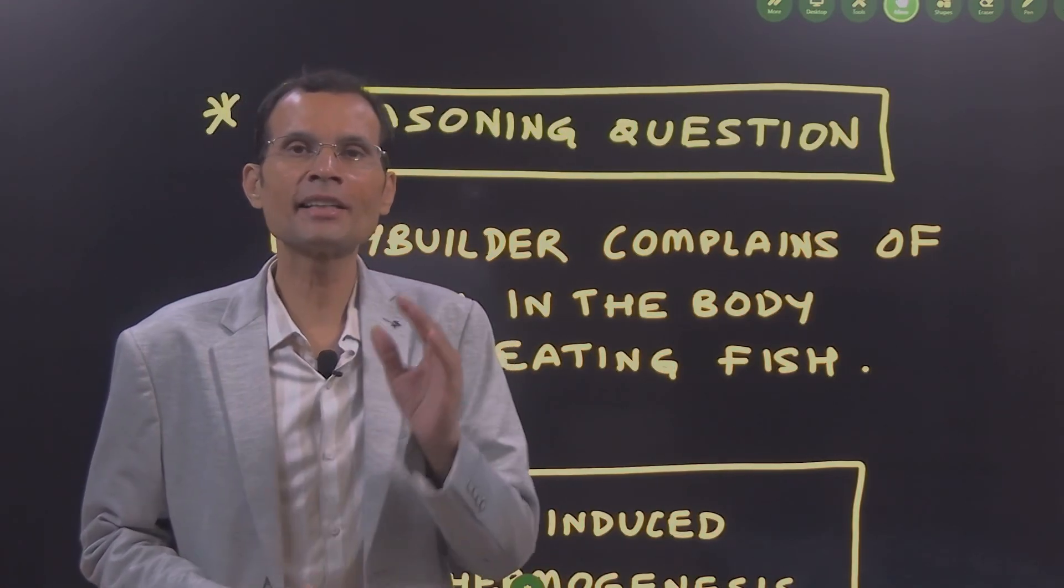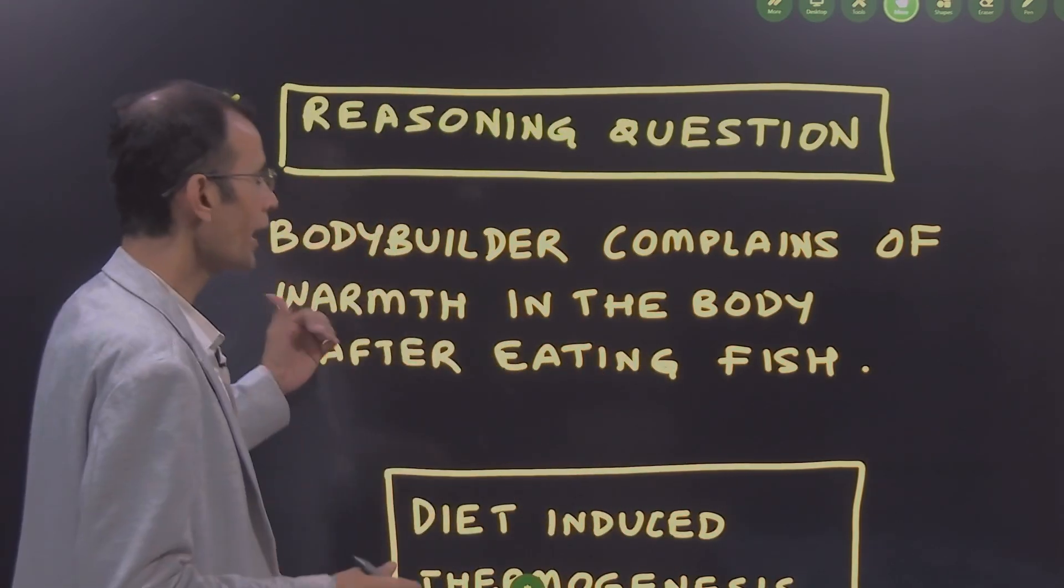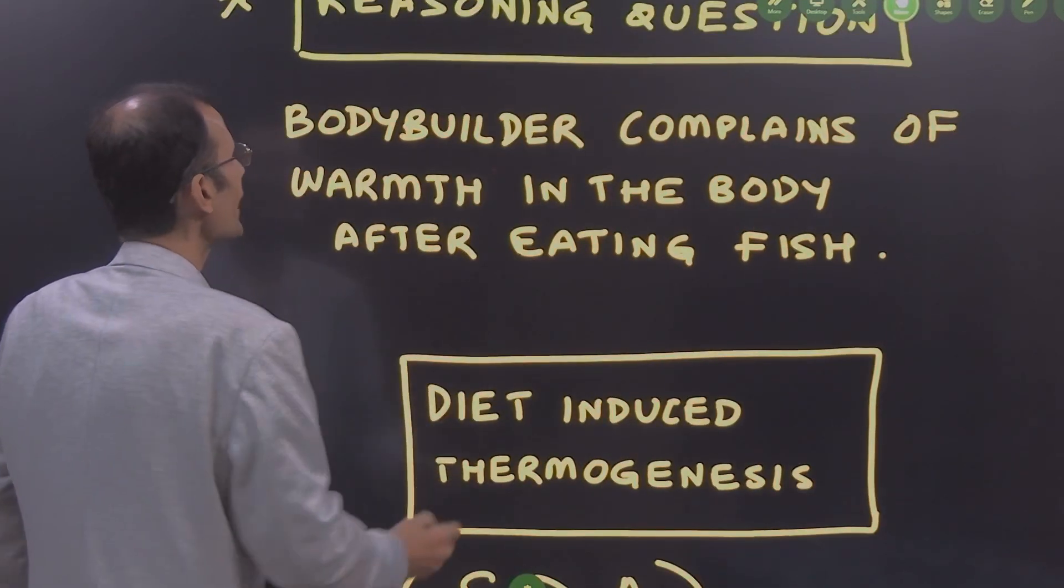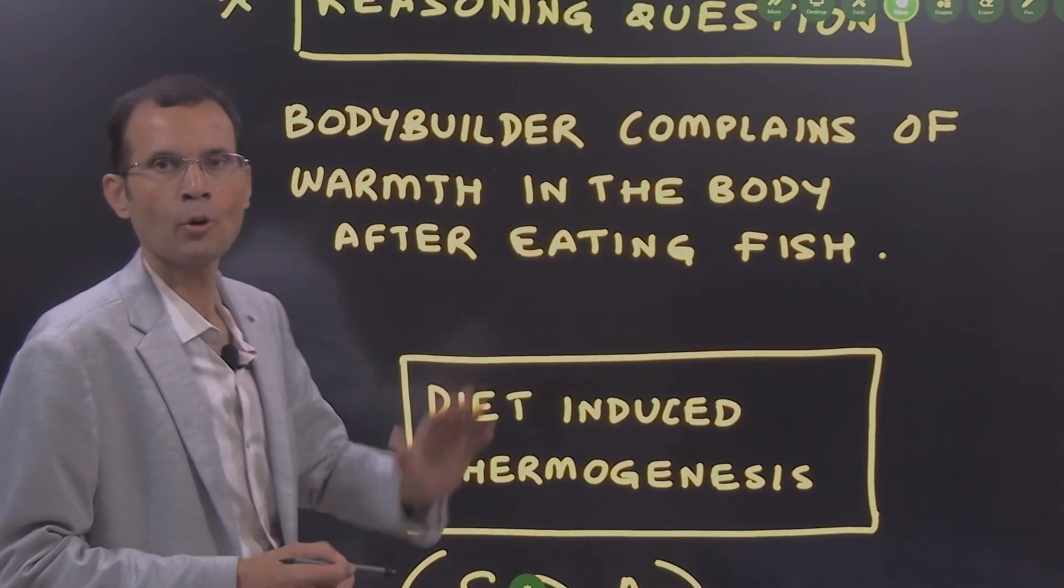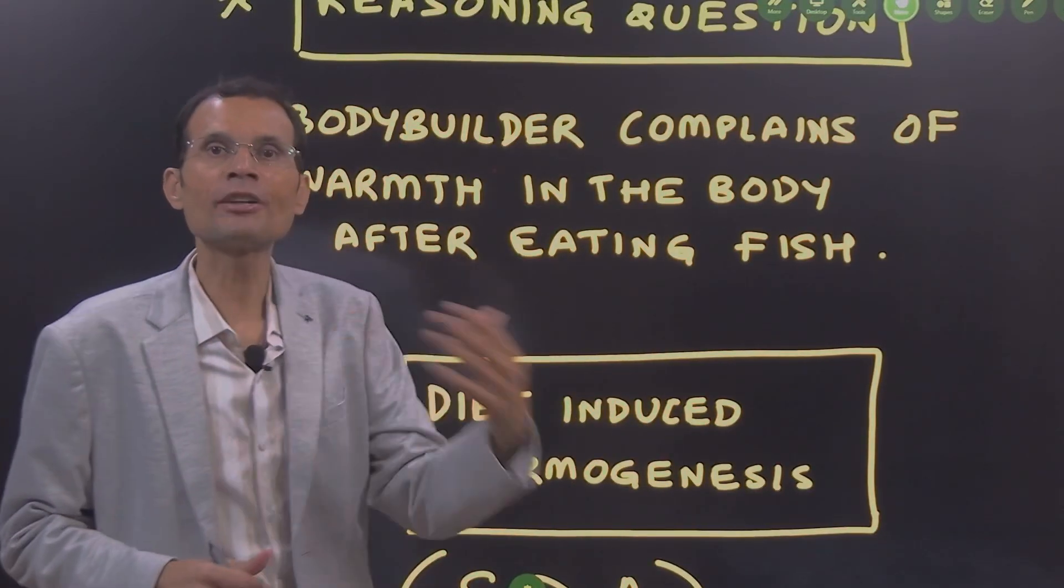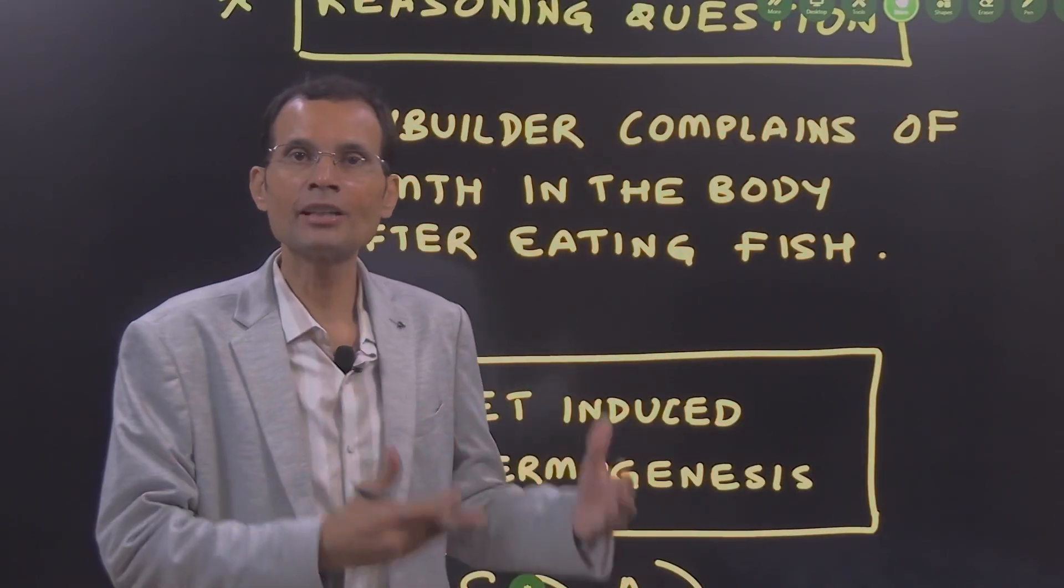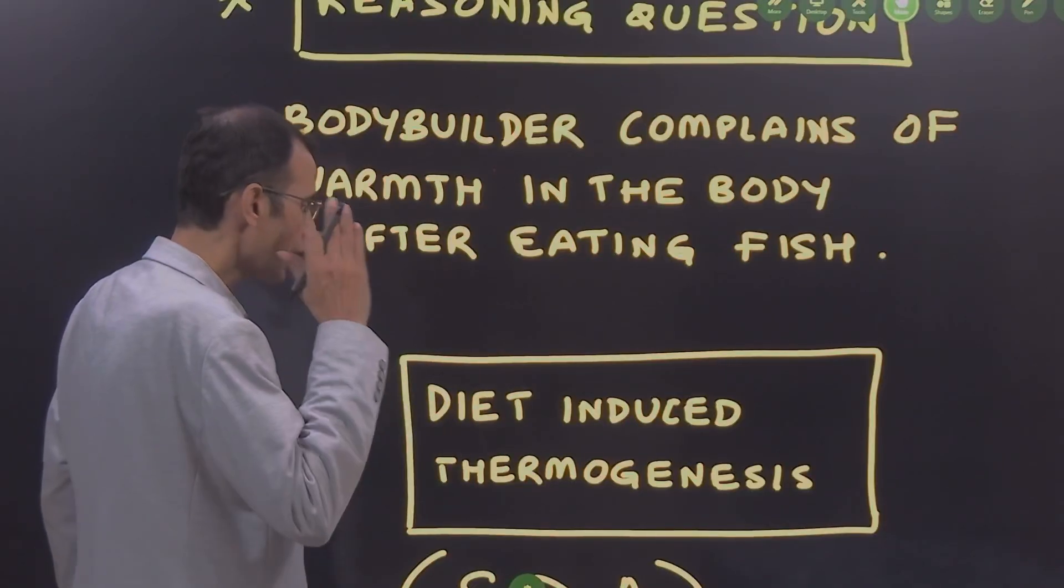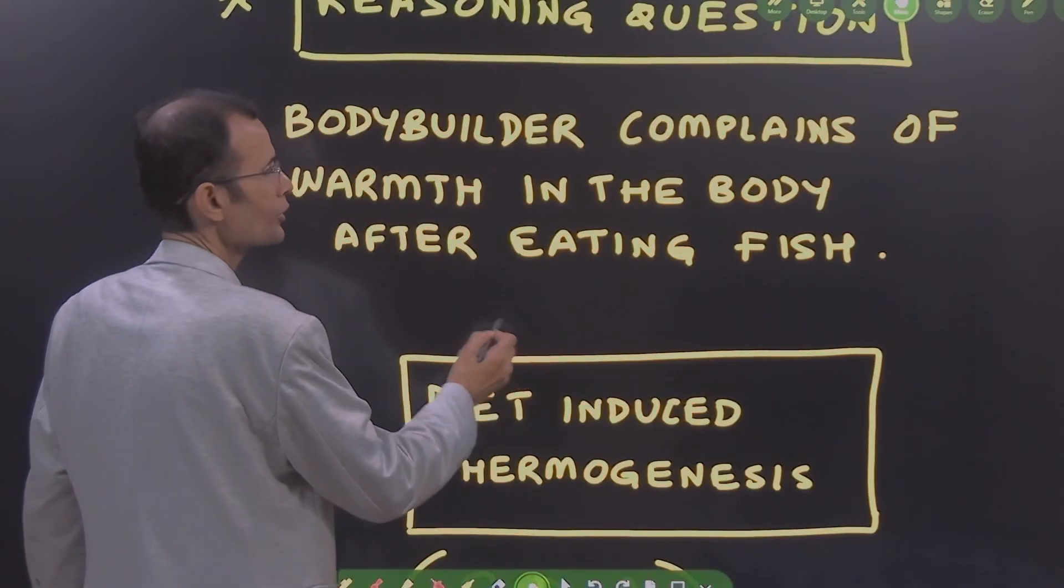Hello friends, this video is on a reasoning question. Let's understand the question and what is the answer. A bodybuilder complains of warmth in the body or heat generation in the body after eating fish. He eats a lot of fish and after eating that he feels warmth or heat generation in the body. Explain the physiologic basis.